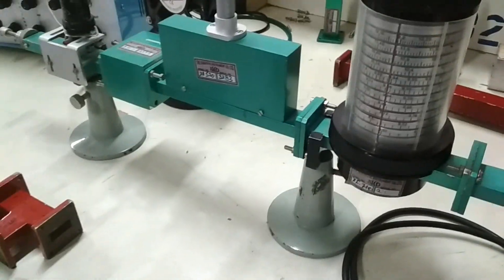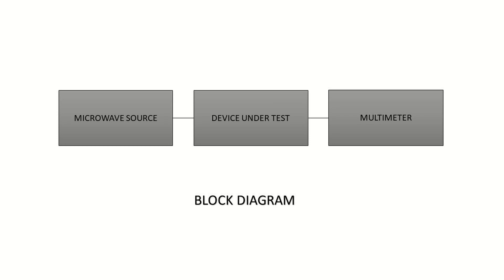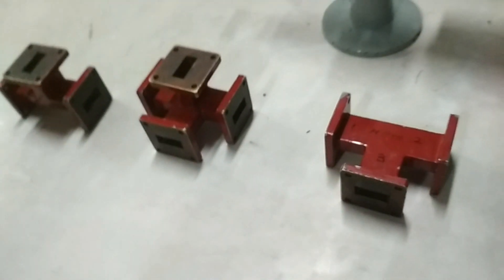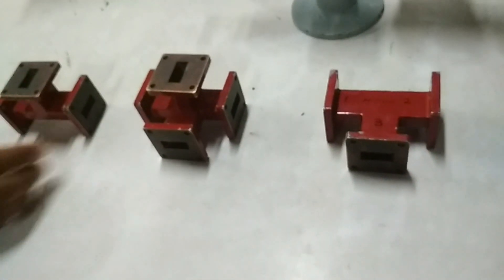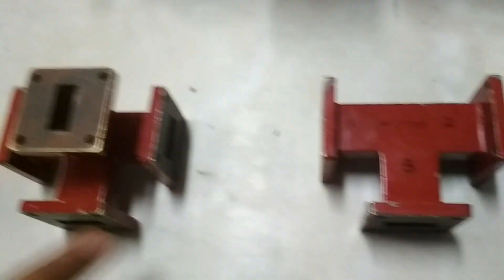So let's move again towards our main block diagram, which consists of the second block having a device under test. We have three devices under test: E-plane, H-plane, and Magic T.